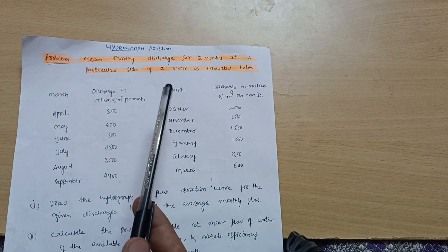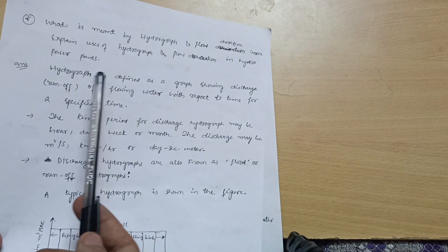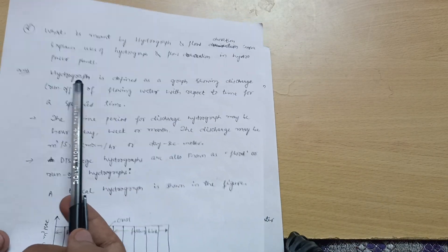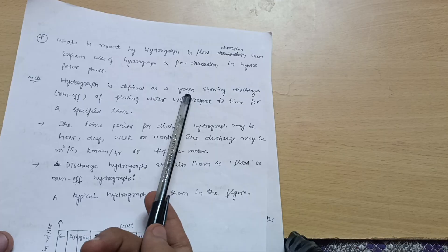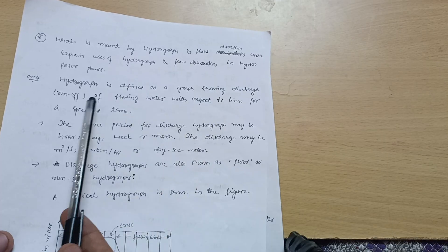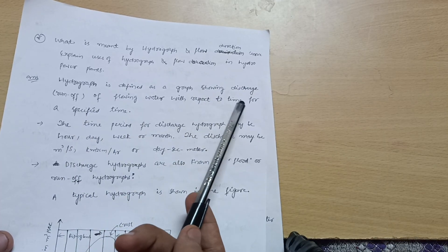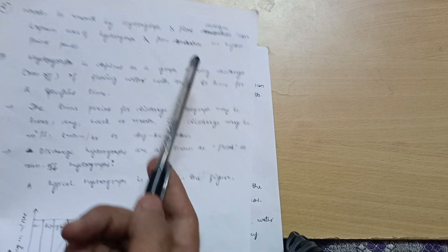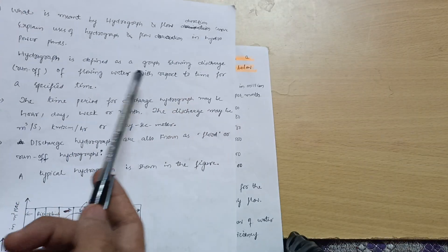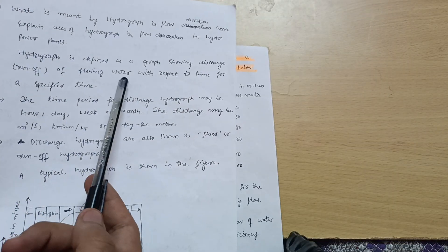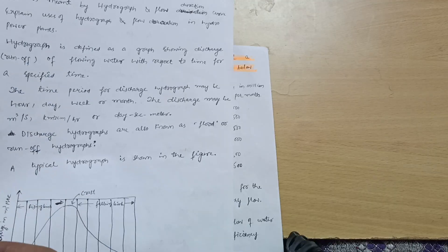First of all, you should know what the hydrograph means. A hydrograph is defined as a graph showing discharge — that is, runoff of flowing water — with respect to time. Simply, it is a graph between time and discharge of the flowing water.